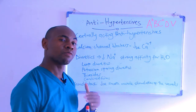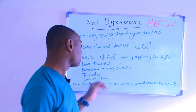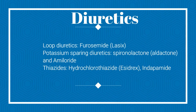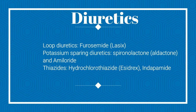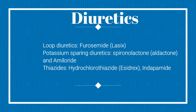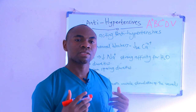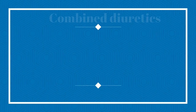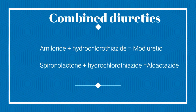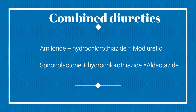Diuretics are further subdivided into several classes. We have loop diuretics, with furosemide (Lasix) as an example. We have potassium-sparing diuretics, with spironolactone (Aldactone) as an example. We have thiazides, with hydrochlorothiazide (Esidrix) and indapamide (Lozol) as examples. There are also combined forms — for instance, Moduretic, a combination of amiloride and hydrochlorothiazide, and Aldactazide, a combination of spironolactone and hydrochlorothiazide.